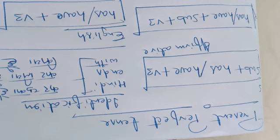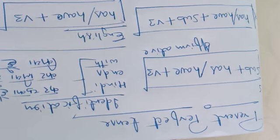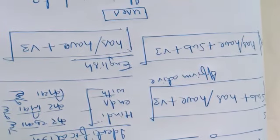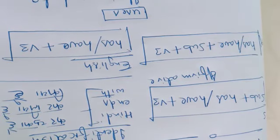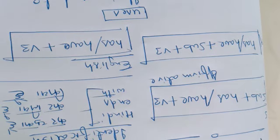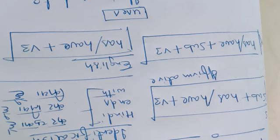So to summarize identification: in Hindi it is 'kar chuka hai,' 'kar liya hai,' or 'kia hai.' In English, the identification is has/have plus V3 — whenever you see has or have combining with the third form of the verb (V3), you can easily understand it is present perfect tense.